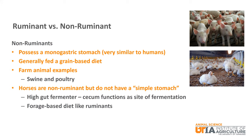While horses are also non-ruminants, they would not be called simple stomached. They are actually hindgut fermenters, which means that the cecum functions as the site of fermentation much like the rumen in cattle. Horses primarily have a forage-based diet like ruminants.